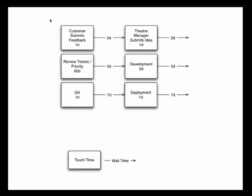Value stream mapping is a technique for identifying how your ideas go through and get built and developed and eventually end up in your customers' hands. A box represents touch time — there's real operational value being added to a piece of work, a feature — and an arrow represents wait time, a feature sitting on a shelf waiting for someone to get to it.